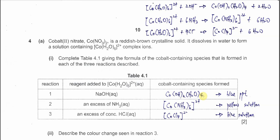Question 4. Cobalt(II) nitrate, after it dissolves in water, will form the complex ion we call hexa aqua cobalt(II) ion, and this ion will react with different ligands to give different colors.